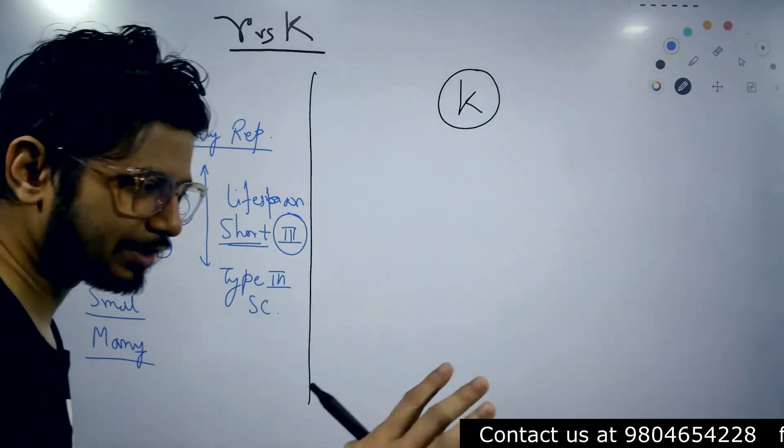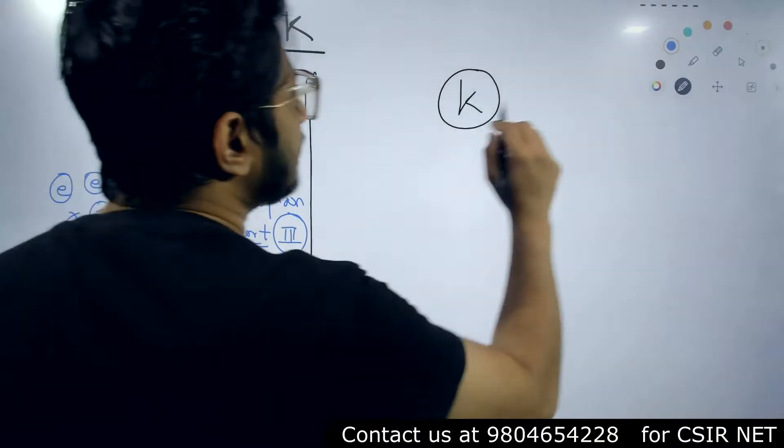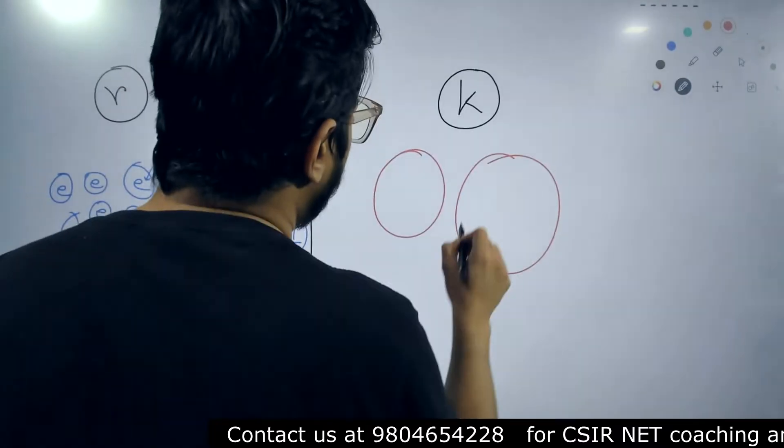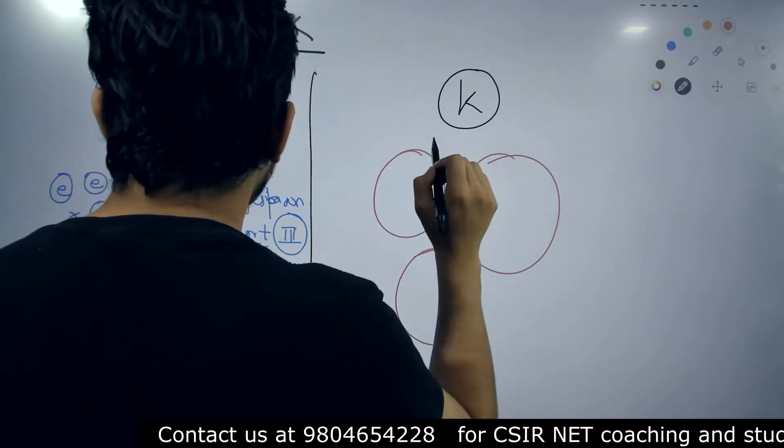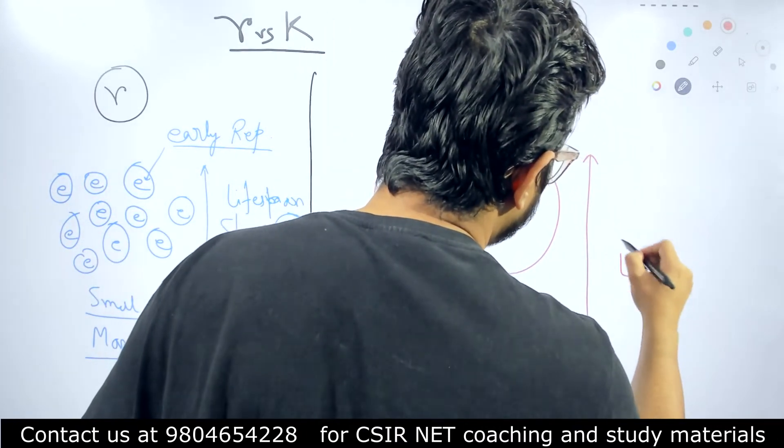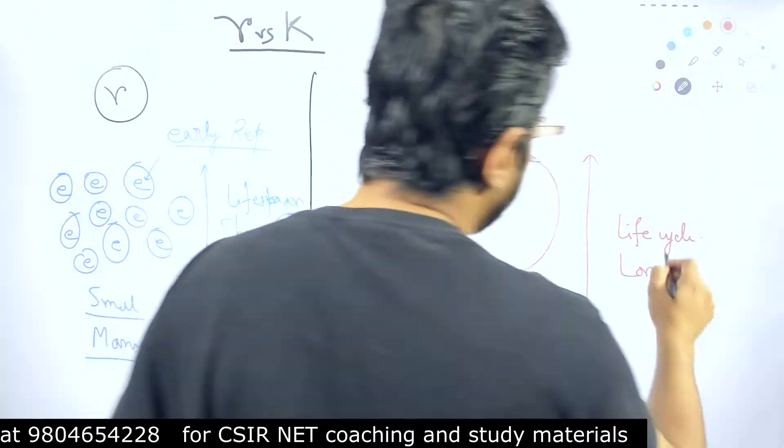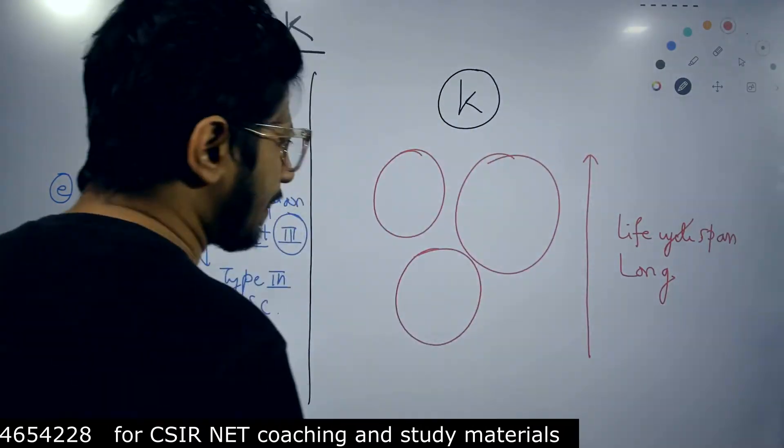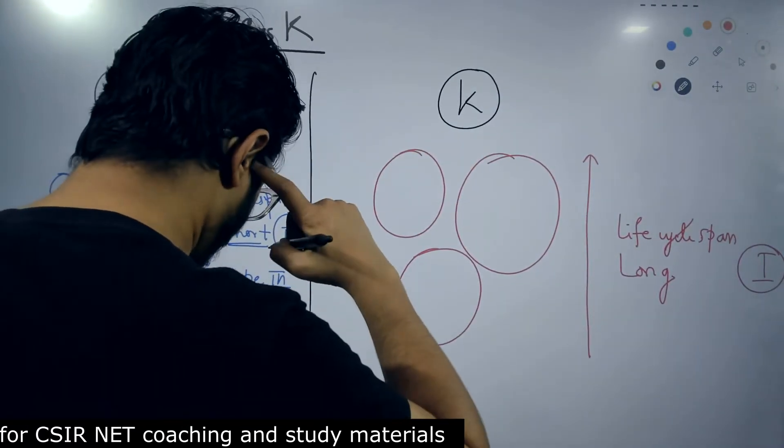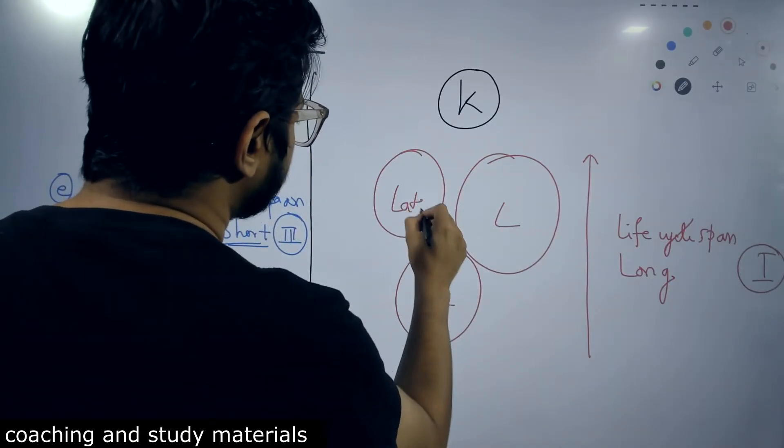In contrast, in K selected species I'll explain with the red color. These are large and few. Large and few, and they have a long life span. Long life span and one means type one survivorship curve, and what you write here is L, L for late.